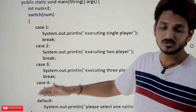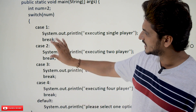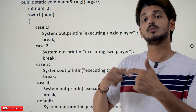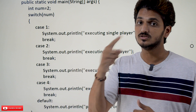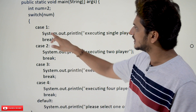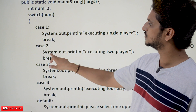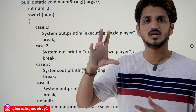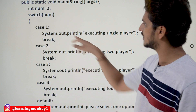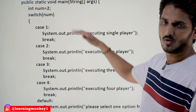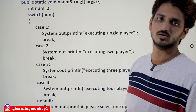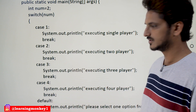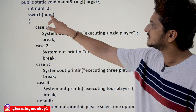Otherwise it keeps on executing the next lines. So for each case, at the end we have to write a break statement; otherwise it keeps on continuing until it finds the break statement. Case 1: statements, break. Case 2: statements, break. You can write any number of statements — whatever the code you need, for simplicity we have written only a single System.out.println. Case 3: break. Case 4: break. Default: statement.